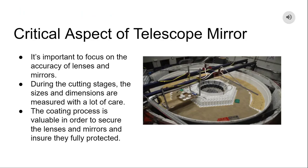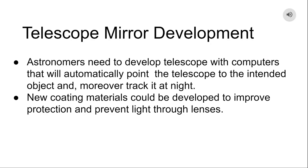Regarding the critical aspects of telescope mirrors, the most critical aspect in manufacturing a telescope is the accuracy of lenses and mirrors. During the cutting stages, the size and dimensions are measured with great care. The coating process is valuable in order to secure the lenses and mirrors and ensure they are fully protected. Additionally, a key area to consider is the electronic accessories that hold a telescope together. Astronomers need to develop telescopes with computers that will automatically point and track the telescope at night. New coating materials could be developed to improve protection.